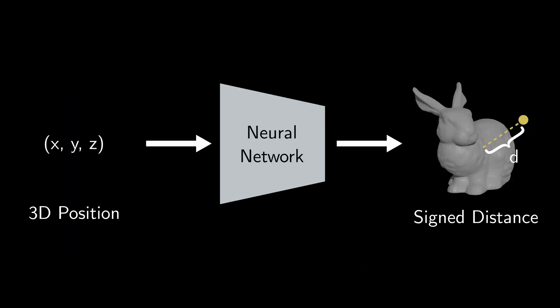The scene is represented by a neural network which takes as input a 3D point in space and as output reports the signed distance to the nearest surface.